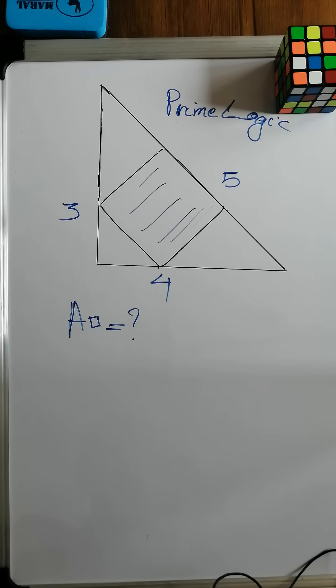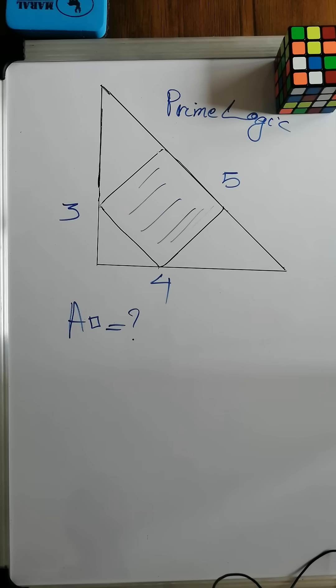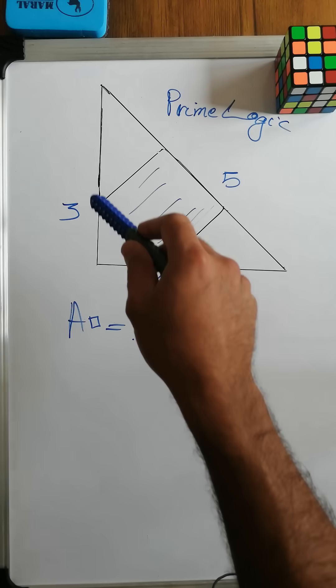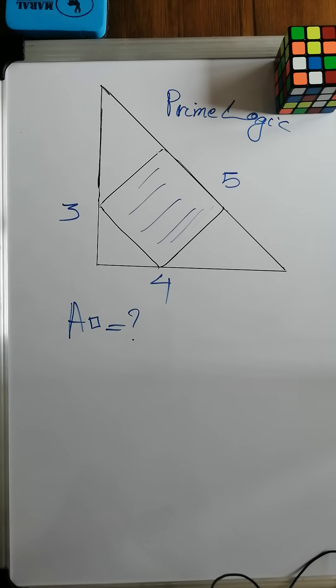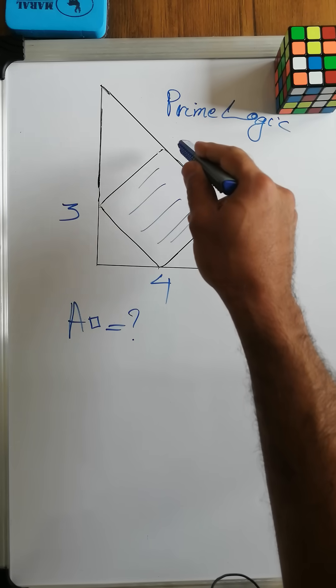But if you would like to see a detailed step-by-step walkthrough, you can check the link below in the related video. This formula works only under this setup: whenever we have a right angle triangle and there is a square inscribed inside on the hypotenuse.